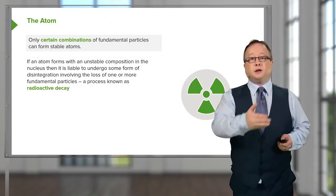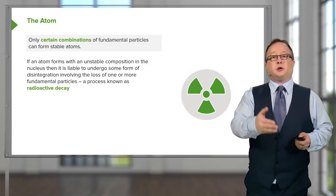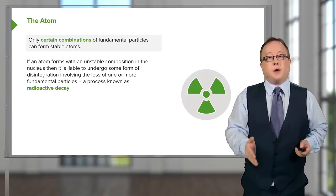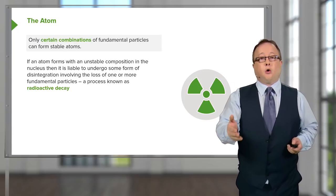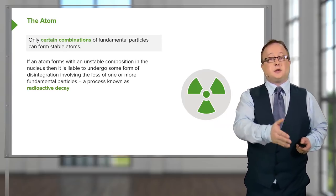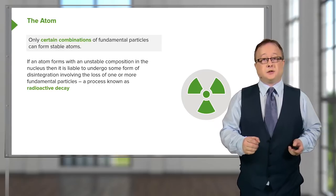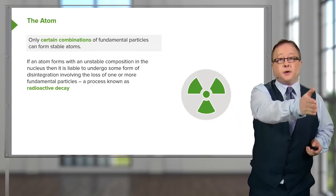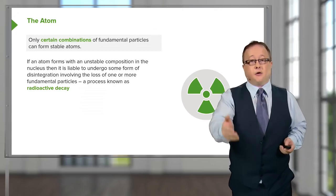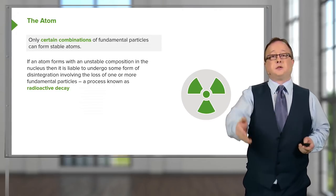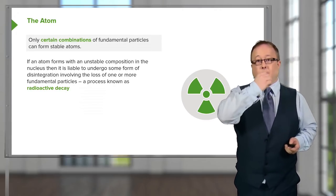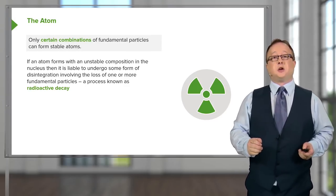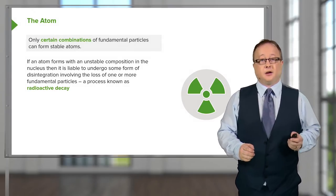Radioactive decay would be not too dissimilar to that which you observe in the decay of uranium to thorium, or used in the fission process — the breakdown of uranium-235 to barium and krypton. This process would be known as a nuclear reaction, and the previous one as radioactive decay.